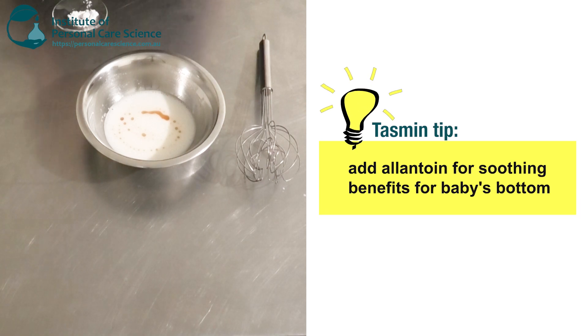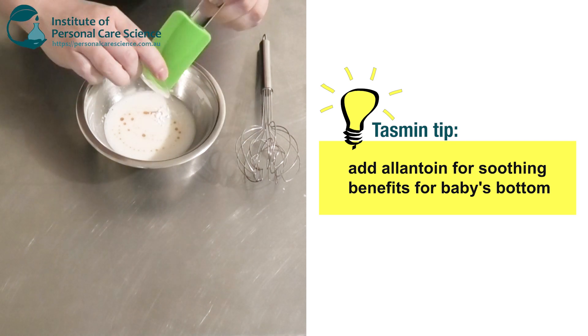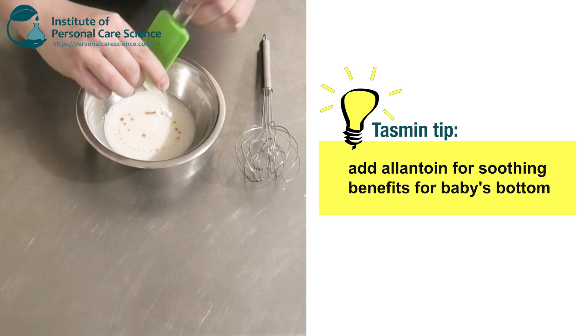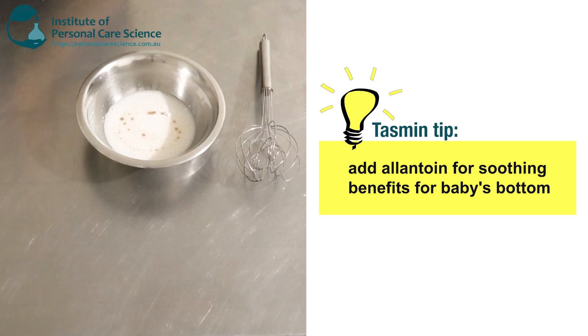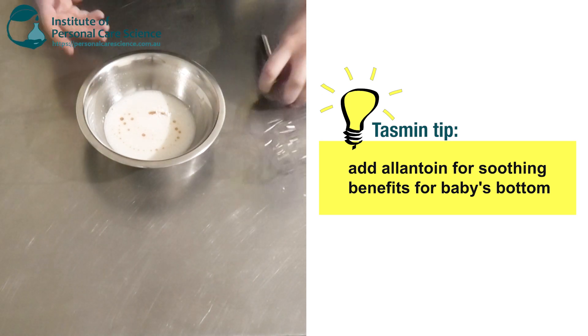And now for my active, I'm going to add some allantoin. So this is going to help with creating that protective barrier for the nappy cream. It's also a really great anti-irritant, so it's good to use in formulas like this or if you're including actives in a formula.